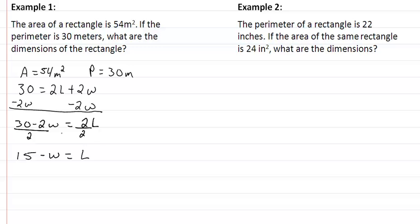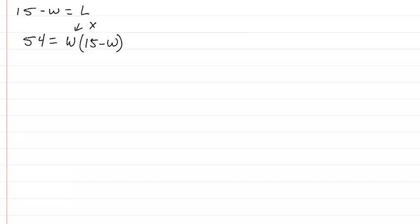We're going to substitute that into our area formula, and we're going to have 54 is equal to W times 15 minus W. Now if you're more comfortable, you can change your W's now to X's. That makes you feel a little more comfortable. It doesn't matter.